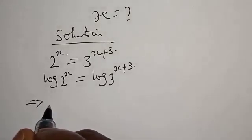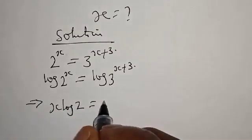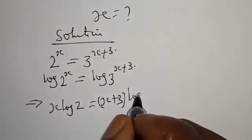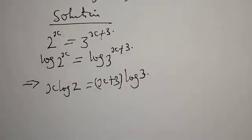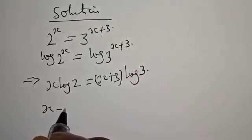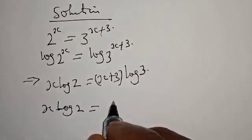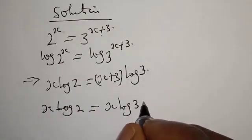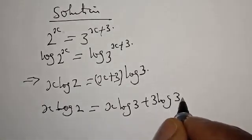This can be written as x log 2 is equal to x plus 3 times log 3. x log 2 is equal to, let's open this bracket, x log 3 plus 3 log 3.